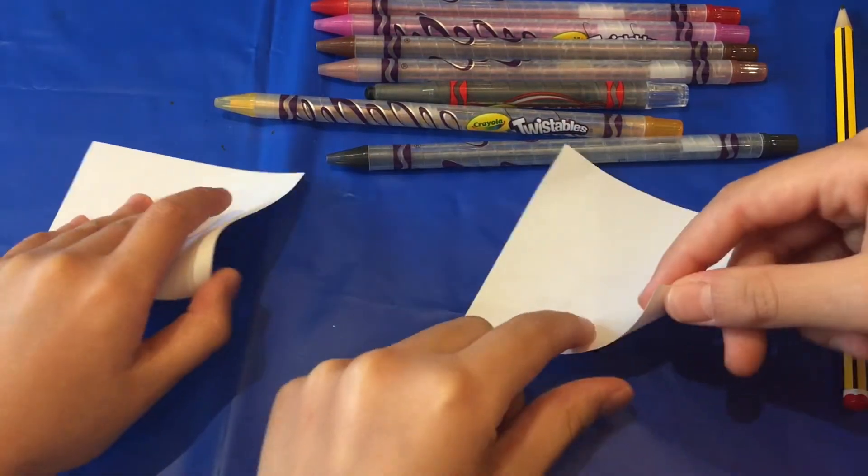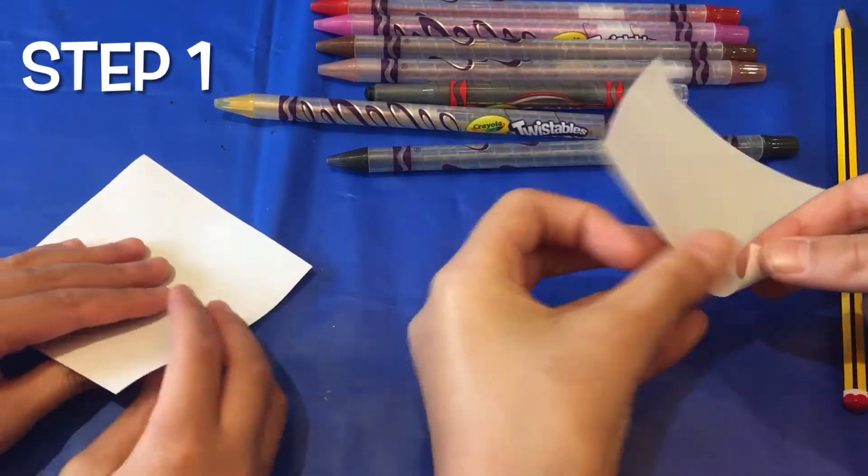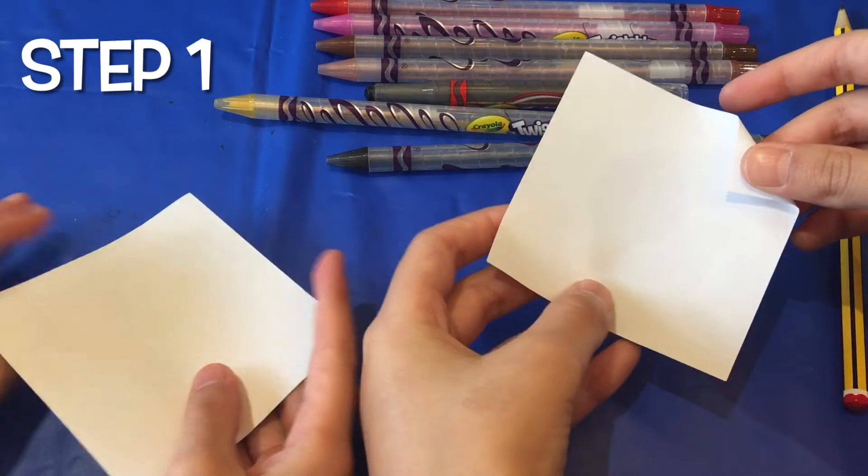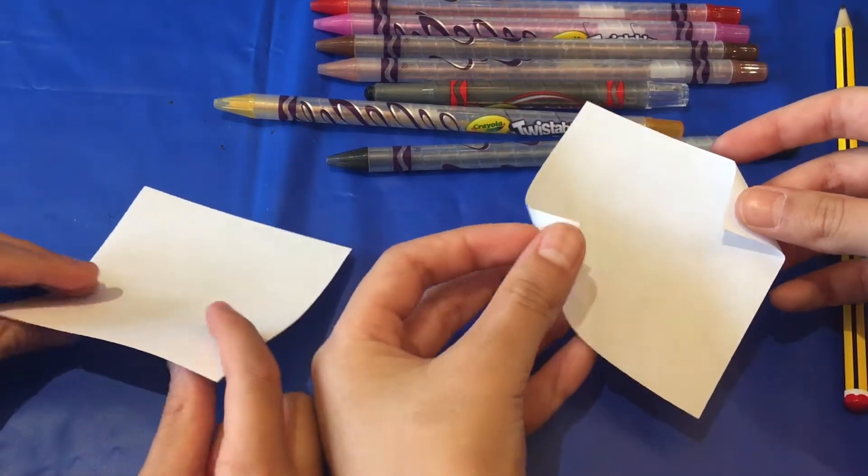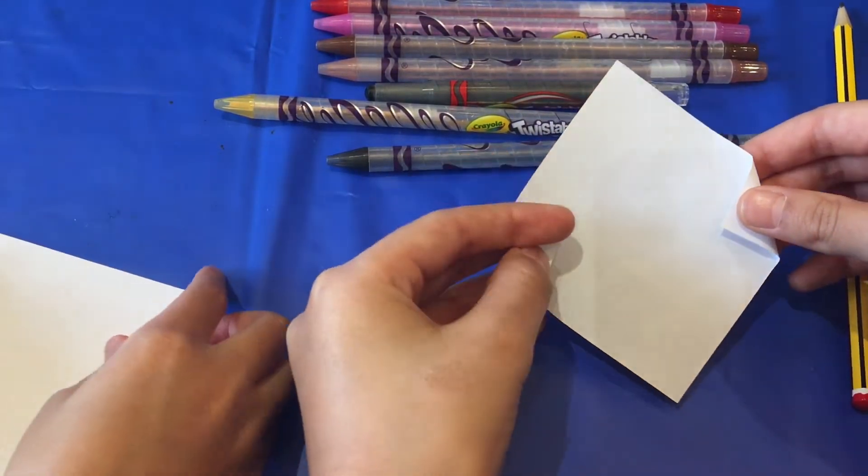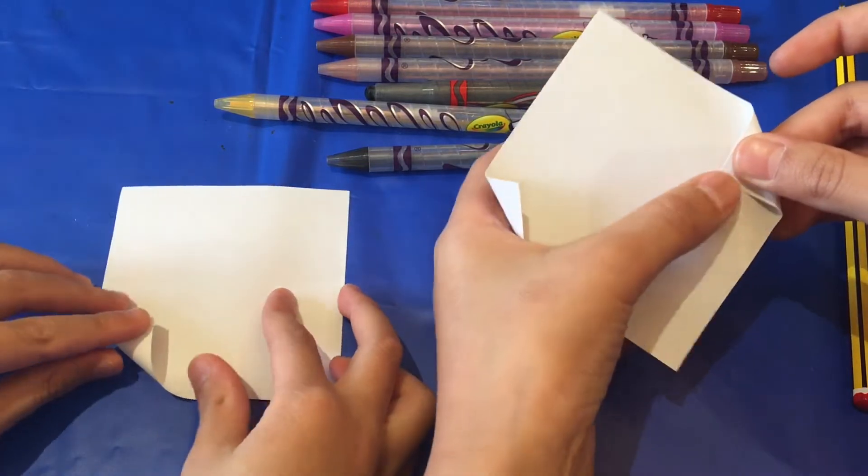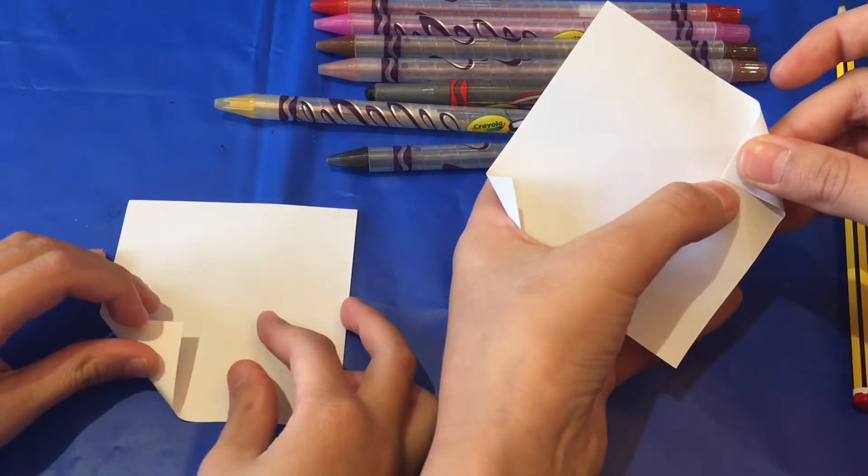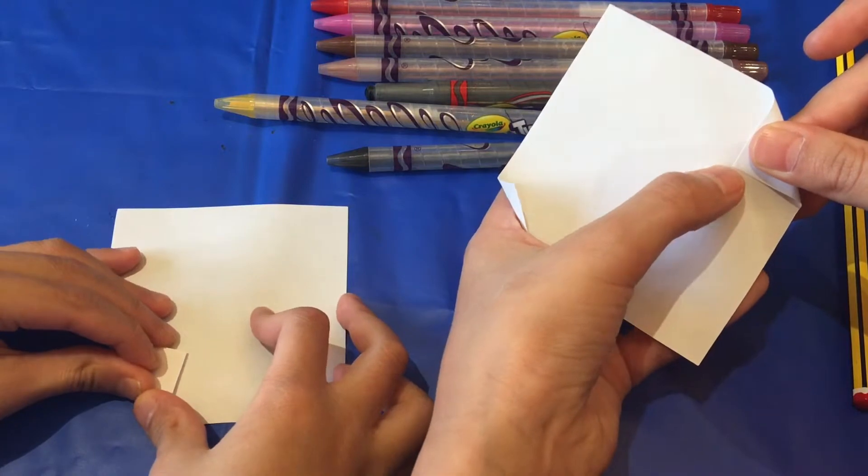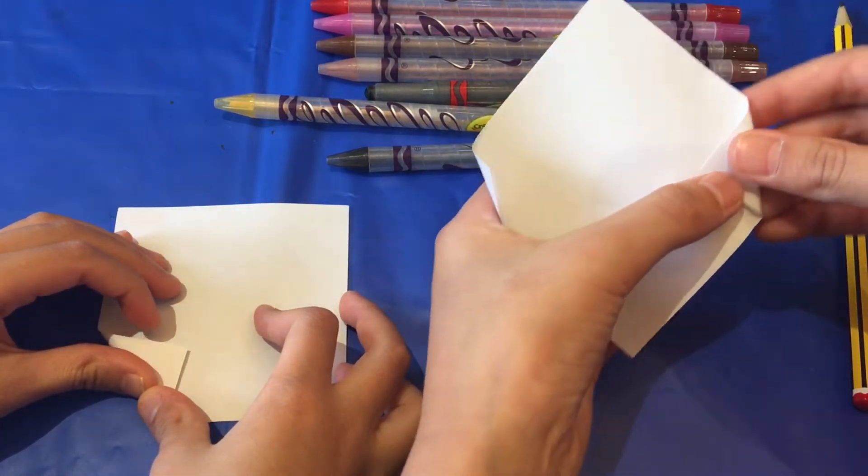So what we're going to do first is we're going to fold this. You're going to take these two corners and fold them like that. Try and make them the same so it's a bit like a triangle. This point is pointing to the middle.